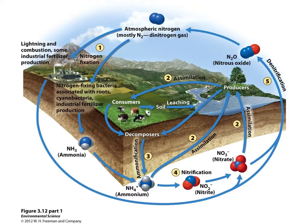Another way of fixing nitrogen is that nitrogen gas can actually enter the soil, where it will come together with what we call nitrogen-fixing bacteria. These are bacteria that, in some cases, live on the roots of legumes, or plants like clover and beans.